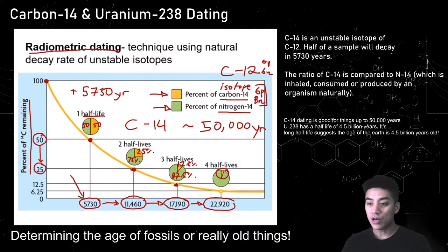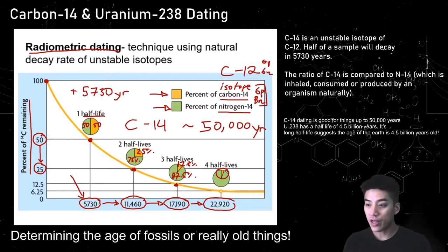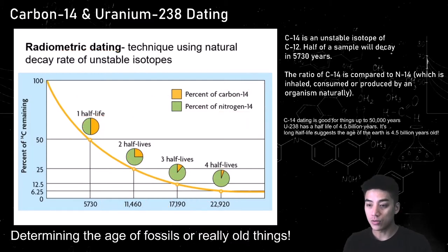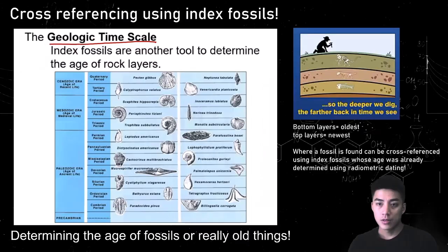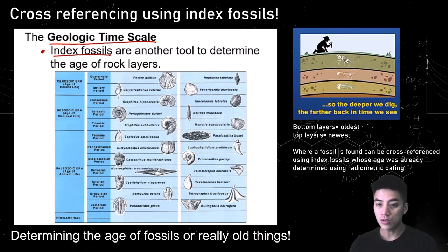On the other hand, you have uranium-238, which has a half-life of 4.5 billion years. Its long half-life suggests that the age of the Earth is 4.5 billion years old, because that's when the Earth was formed and received all its materials and isotopes. Cross-referencing using index fossils is another tool that an archaeologist or biologist could use to determine the age of rock layers.